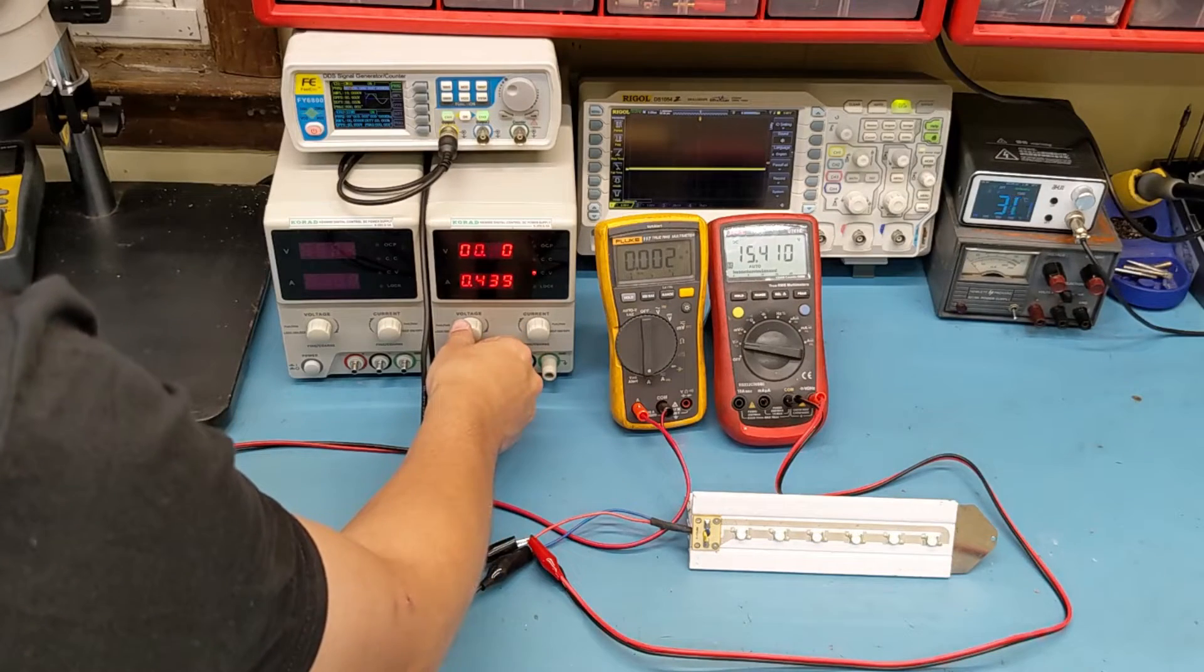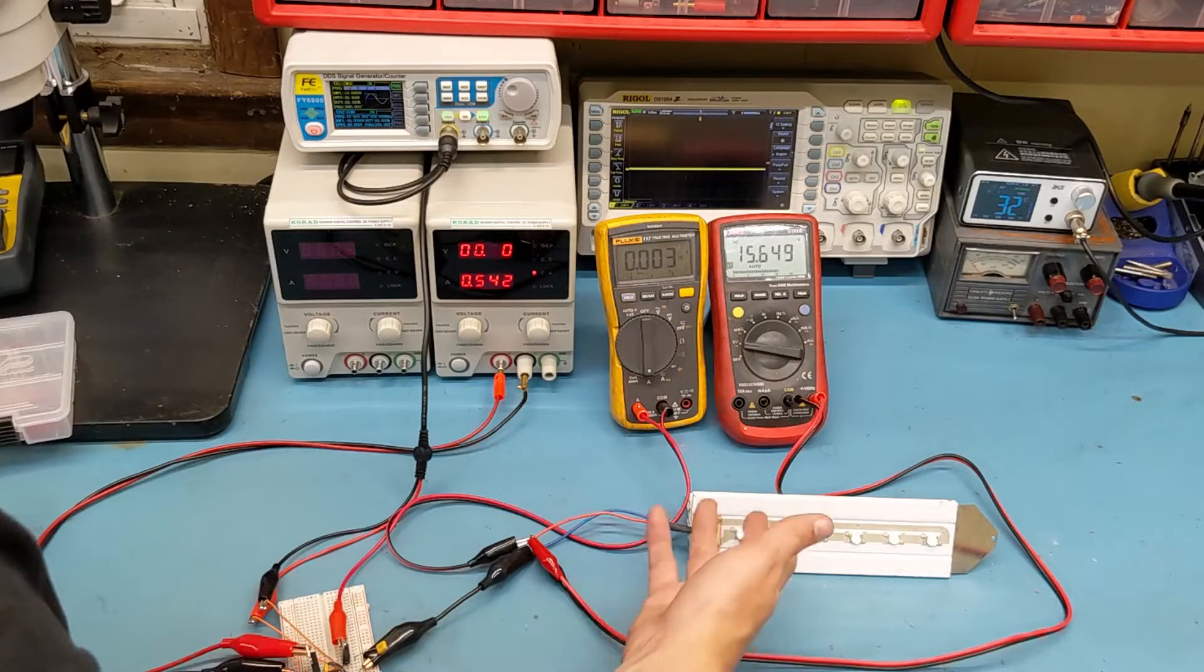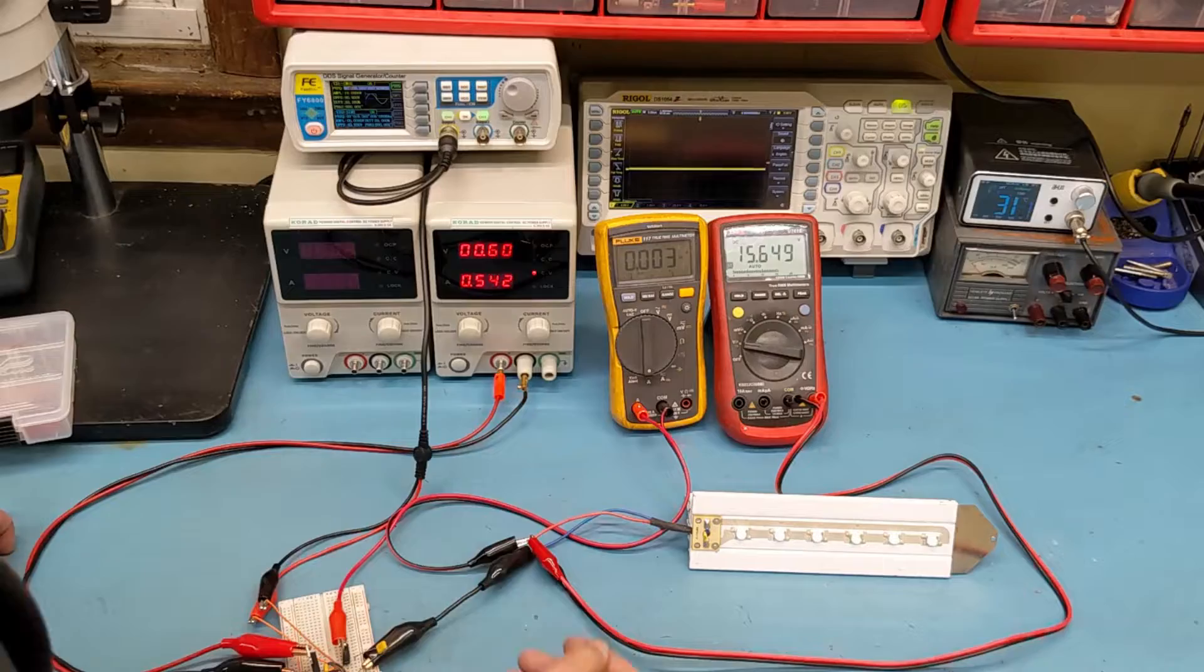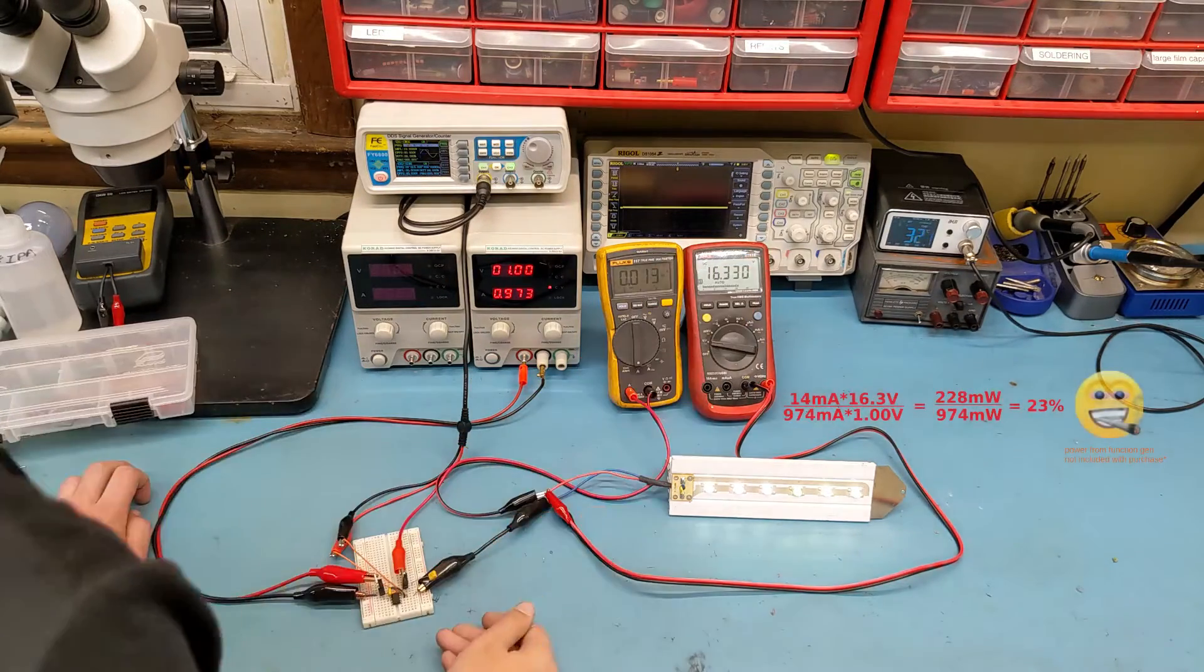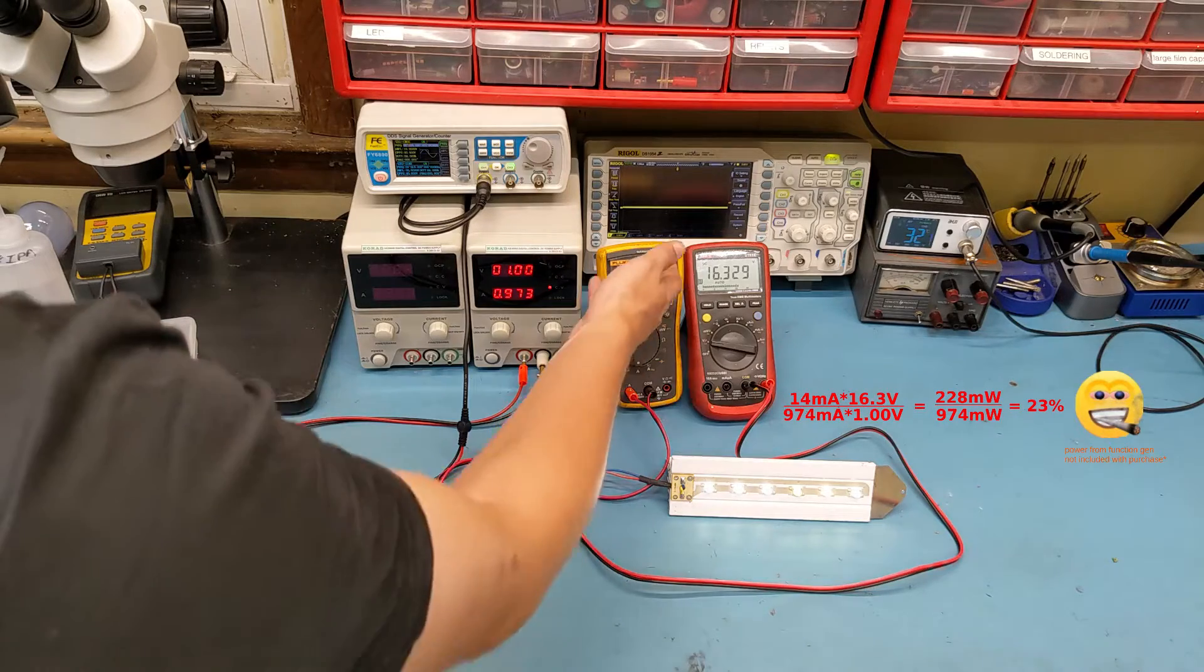Let's go ahead and wind this up a little bit further. At around 600 millivolts, the LEDs are definitely turning on. And now with 1 volt at the input of this, we are getting 16 volts at the output and 13 milliamps.